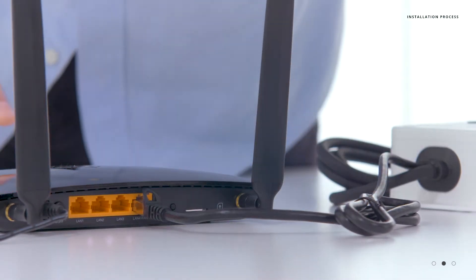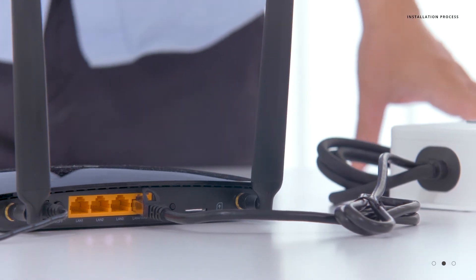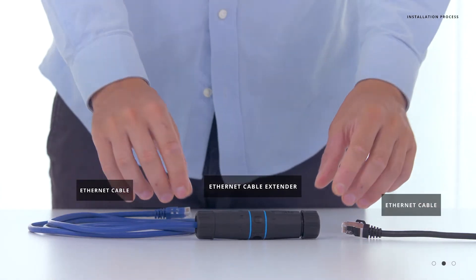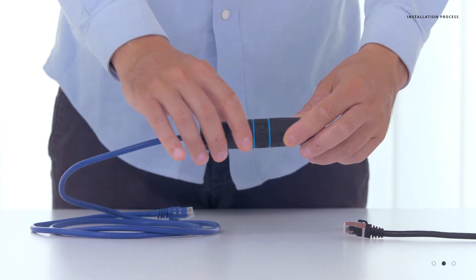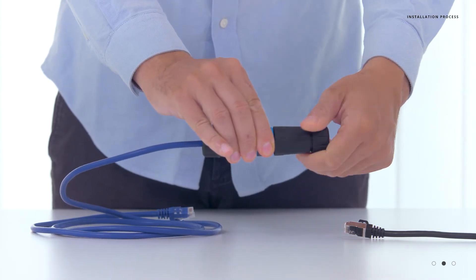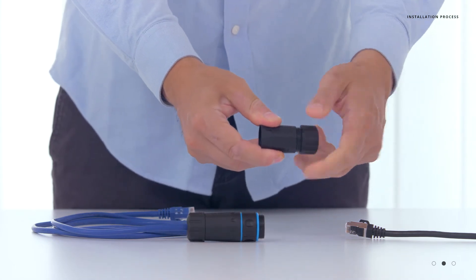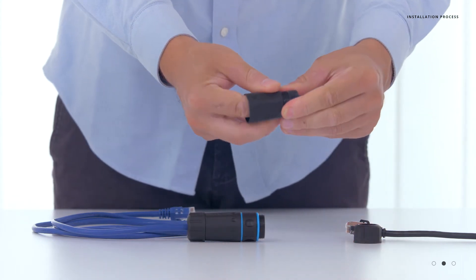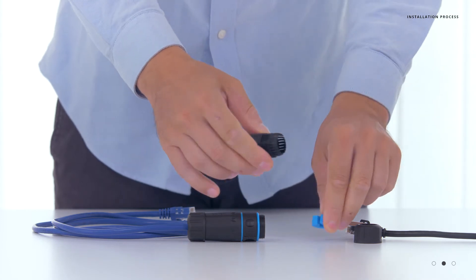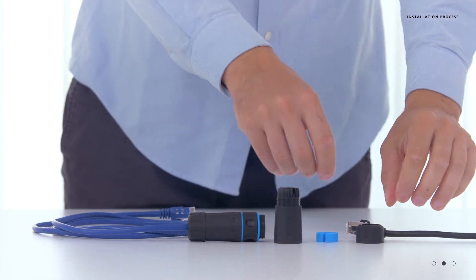In instances where we need to have a longer cable run, we've provided an Ethernet cable extender. This is meant so that you are able to connect standard Ethernet cables end-to-end using a coupler. Simply unscrew the collar, take out the gasket, and then we will install in reverse.